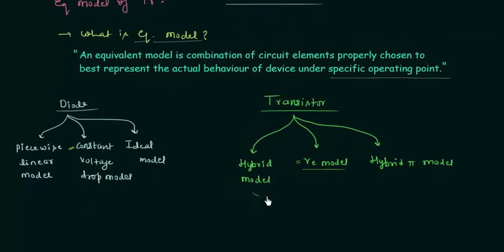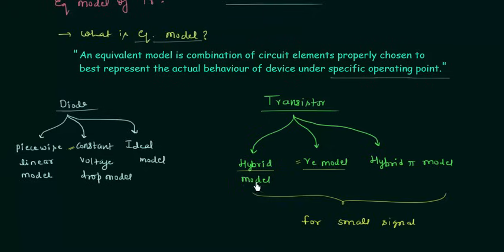All three models are for small signals. In the next lecture we will study the hybrid model, and in the coming presentations we will complete the RE model and the hybrid-pi model. All three models are very important in this course. Once you understand how to obtain the equivalent model of the transistor, you can easily perform the AC analysis. So this is all for this lecture. See you in the next one.